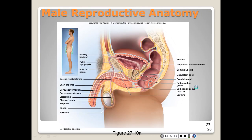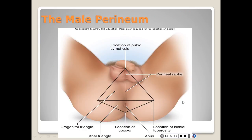The scrotum is divided into left and right compartments by an internal median septum. This protects each testis from infections involving the other side. The location of the septum is marked externally by the perineal raphae, which extends anteriorly along the ventral side of the penis and then posteriorly toward the margin of the anus.